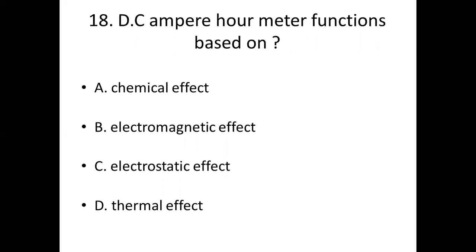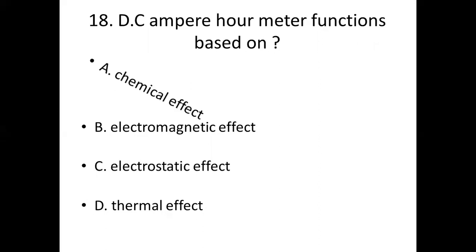Eighteenth bit. DC ampere hour meter functions based on. Option A: Chemical effect. Option B: Electromagnetic effect. Option C: Electrostatic effect. Option D: Thermal effect. Answer: Option A, Chemical effect.